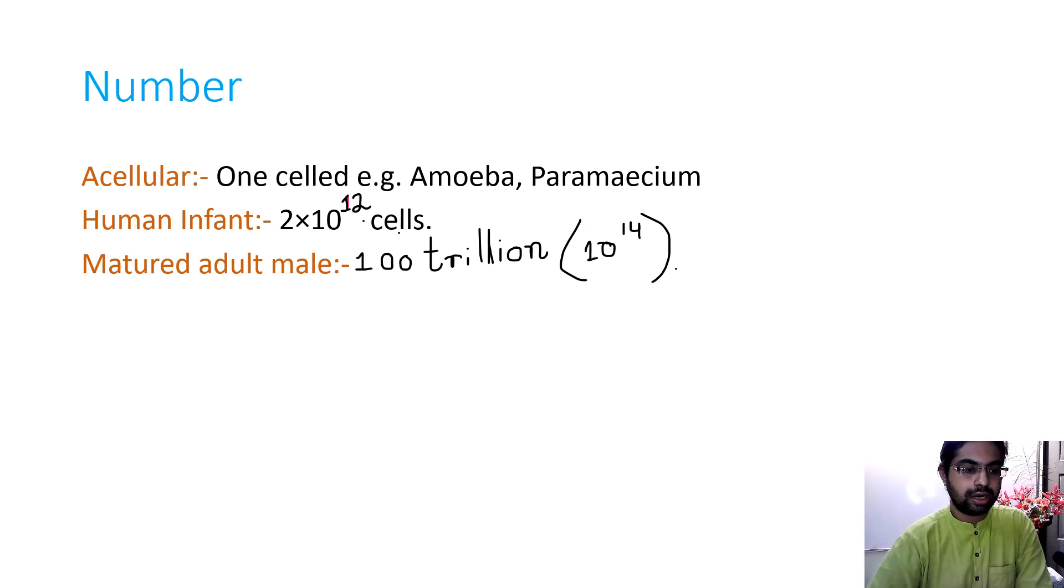Now number, cell number. Acellular: sometimes we find a single cell in an organism. That cell itself is an organism. That is acellular, means one-celled. Example: amoeba, paramecium.